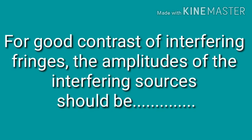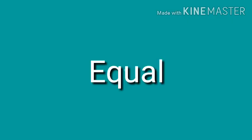First question is: for good contrast of interfering fringes, the amplitudes of the interfering sources should be — the answer is equal. The amplitudes of the interfering sources should be equal.